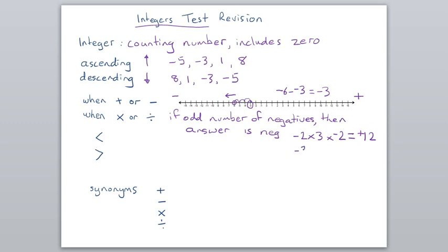If they were all negative in this example, the result's going to be twelve. But we've got one, two, three negatives. That's odd. So the answer is going to be negative.